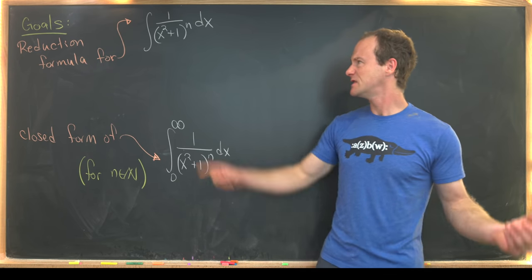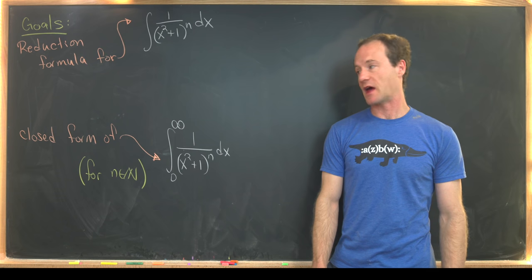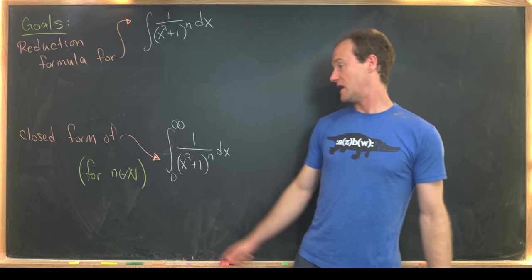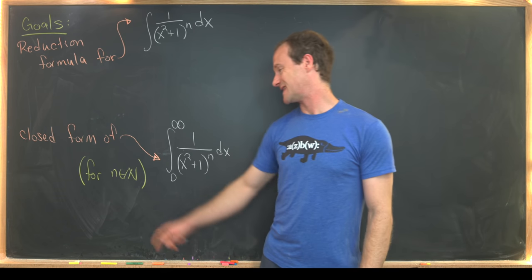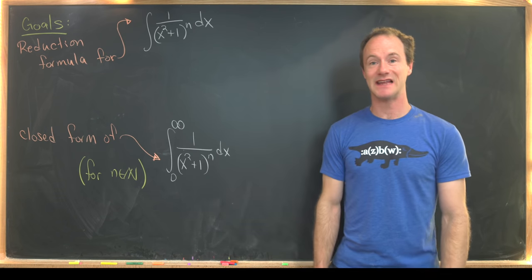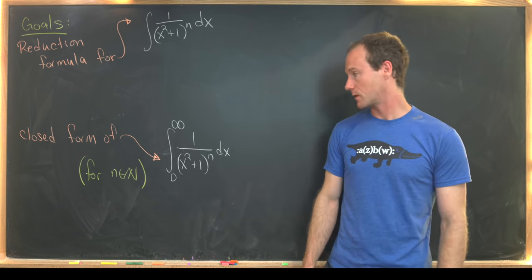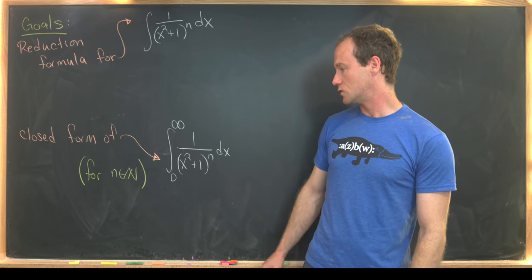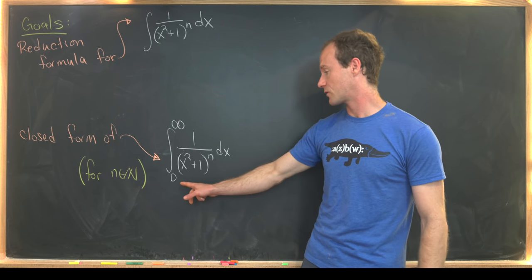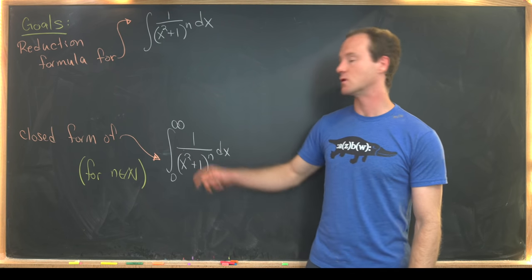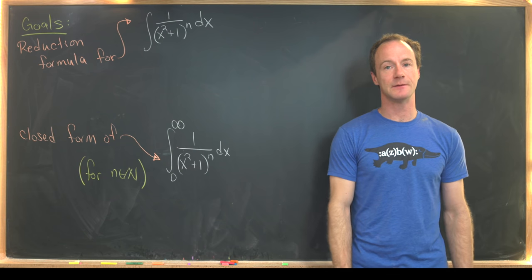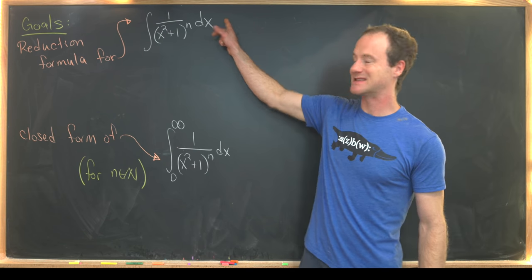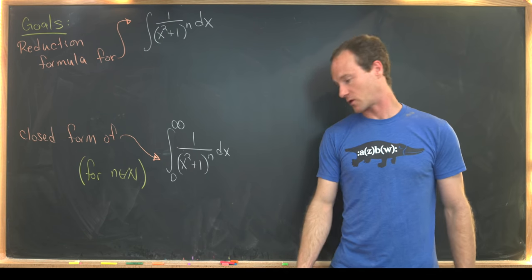Our goal for today will be to build a reduction formula for the integral of 1 over x squared plus 1 to the n. This is some arbitrary n at the moment, but then if we fix n as a natural number, we'll find a nice closed form for the same integral from 0 to infinity.